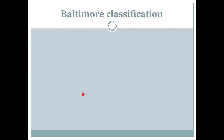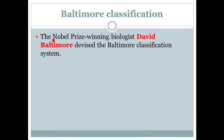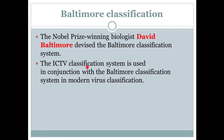Let's start and see what Baltimore Classification is. The first point regarding Baltimore Classification is that Nobel Prize-winning biologist David Baltimore devised the Baltimore Classification system. He was a biologist and Nobel Prize winner who was the first to devise this classification system. 'Devise' means to invent or introduce something new.